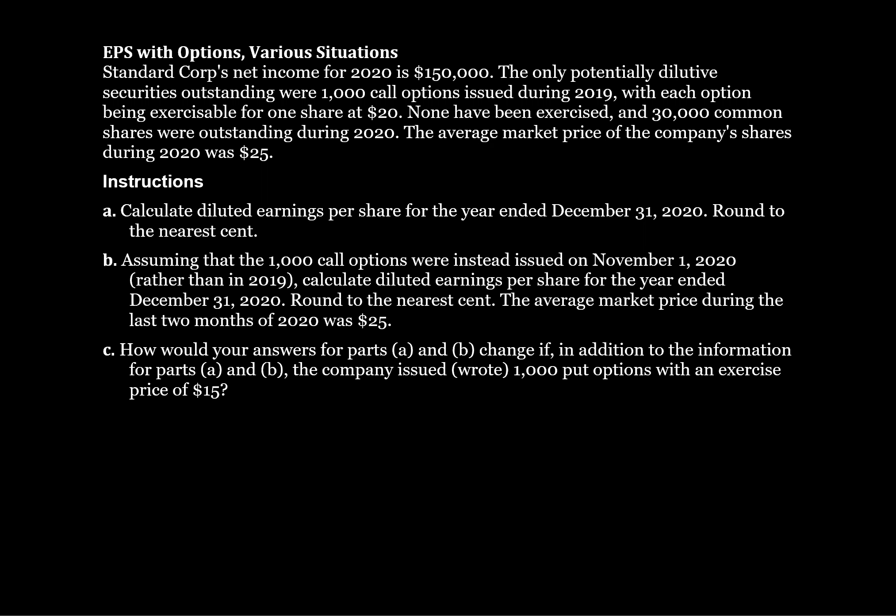This question will walk through the calculation of diluted earnings per share. Standard Corp's net income for 2020 is $150,000. The only potential dilutive security outstanding were 1,000 call options issued during 2019, with each option being exercisable for one share at $20. None have been exercised, and 30,000 common shares were outstanding during 2020. The average market price during 2020 was $25. Calculate the diluted earnings per share for the year ended December 31, 2020.